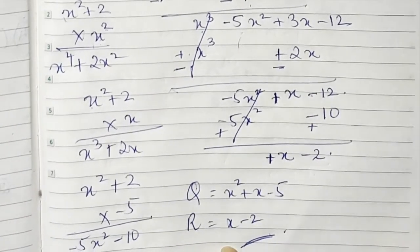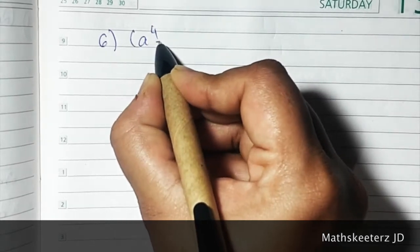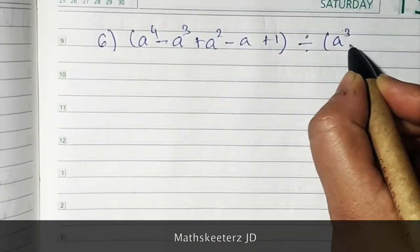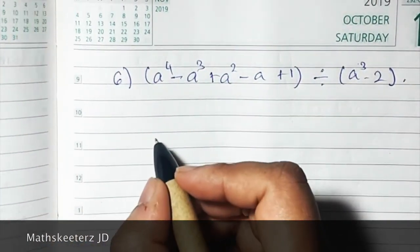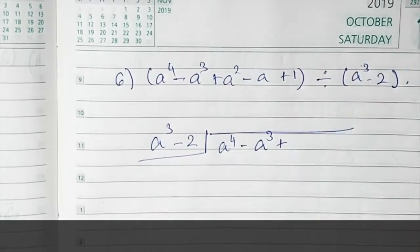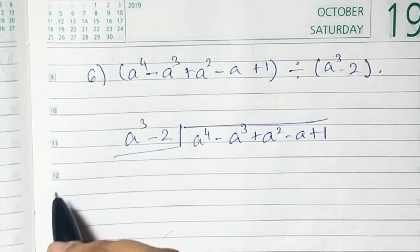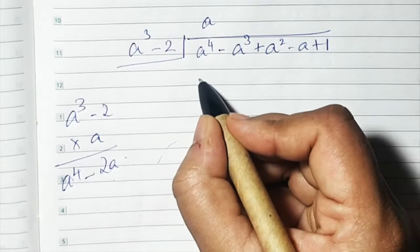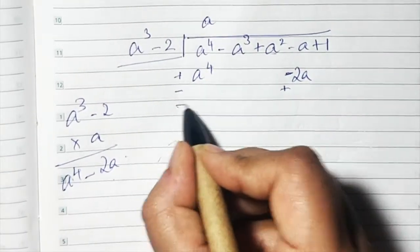Sum number 6: a⁴ - a³ + a² - a + 1 divided by a³ - 2. It is already arranged properly: degree 4, 3, 2, 1. So let's start. Set up a³ - 2 outside and a⁴ - a³ + a² - a + 1 inside. The divisor starts with a³ and dividend with a⁴, so 1 a is missing. Multiply a³ - 2 by a: a × a³ = a⁴, and -2 × a = -2a. Write a in the quotient.